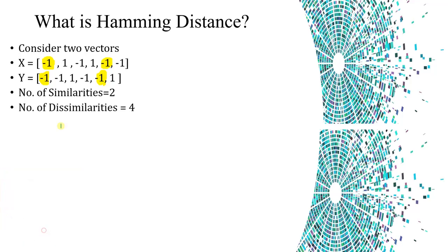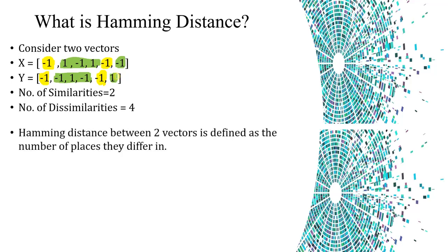The rest will be dissimilarities. The second element is one in one vector and minus one in the other, so they are different. Whatever positions are different are dissimilarities. So how many positions are different? Hamming distance between two vectors is defined as the number of places they differ in. Here the Hamming distance will be four.